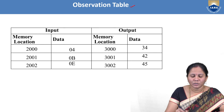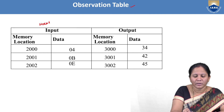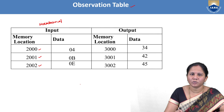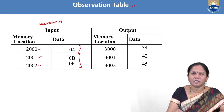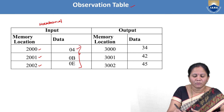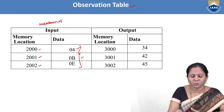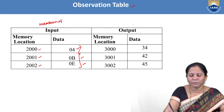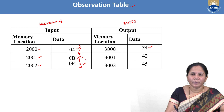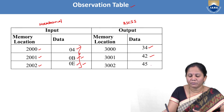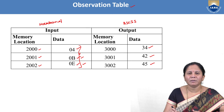In the observation table, inputs were taken in memory locations 2000, 2001, and 2002 since CX was 3. The hexadecimal input 04 converted to ASCII gives 34. The input 0B converted to ASCII gives 42, because 37 is added (not 30) since it is in the range A to F. The input 0E converted to ASCII gives 45. This is the assembly language program to convert hexadecimal numbers into ASCII numbers.